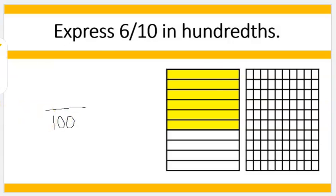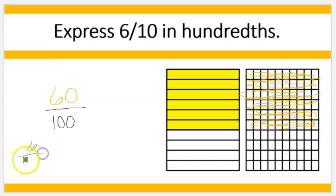So now I'm going to color in the same section to be equal. It becomes sixty. I've colored in sixty boxes. So six-tenths is the same thing as sixty one-hundredths.